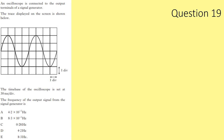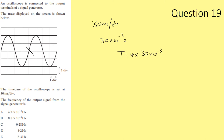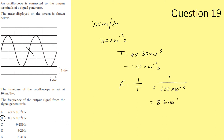Question 19. We have an oscilloscope trace for an AC source with a time-base setting of 30 ms per division — that's 30×10⁻³ s. There are 4 divisions per complete wave, so T = 4×30×10⁻³ = 120×10⁻³ s. Frequency = 1/T = 1/(120×10⁻³) = 8.3 Hz. Answer: B.